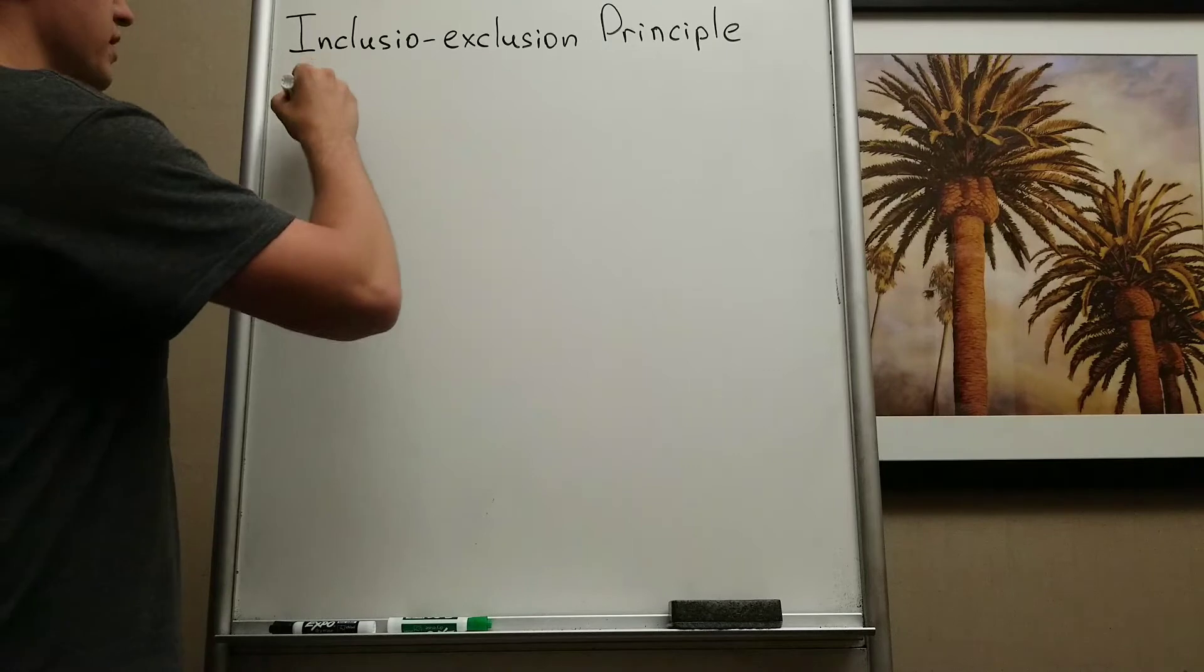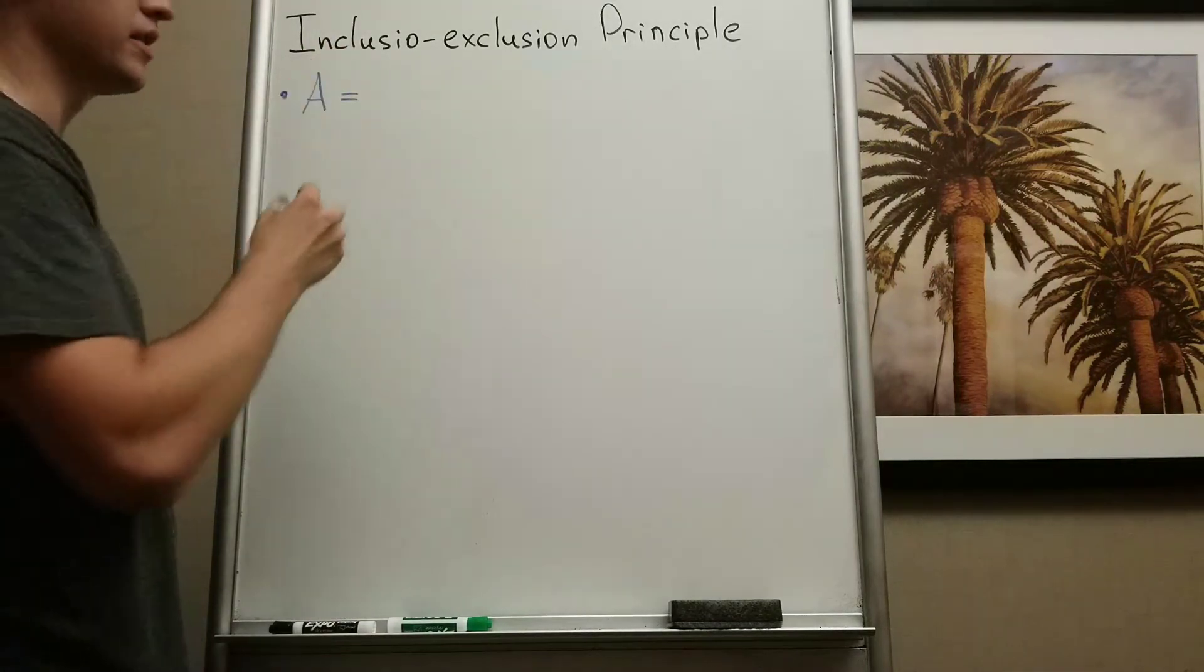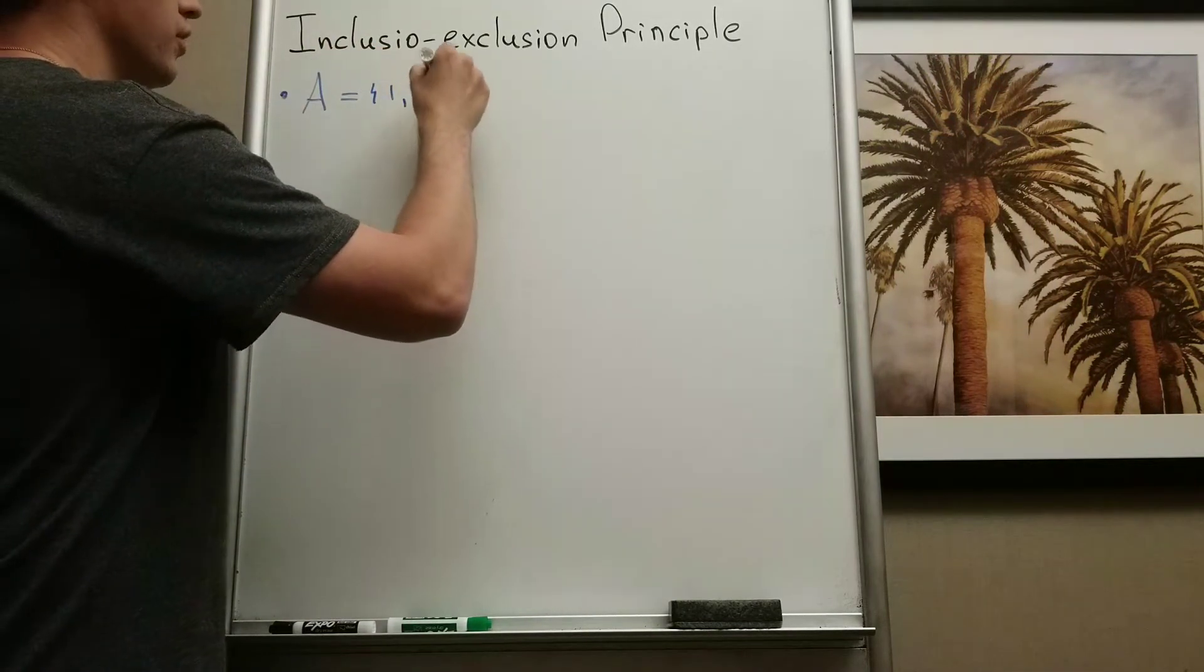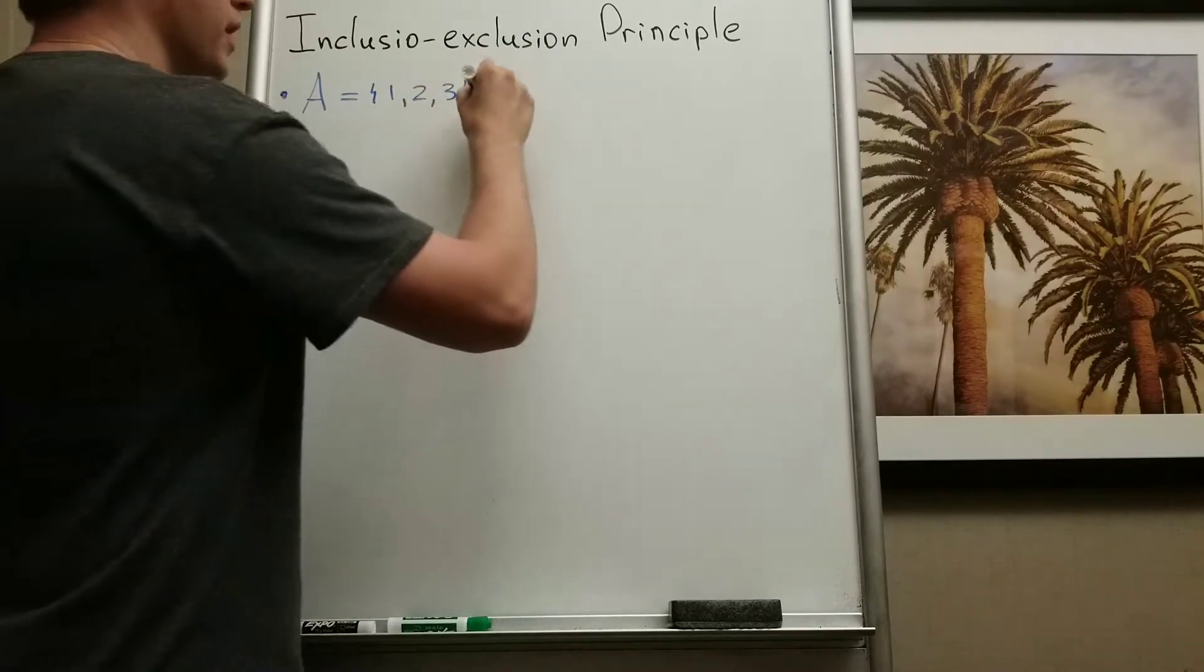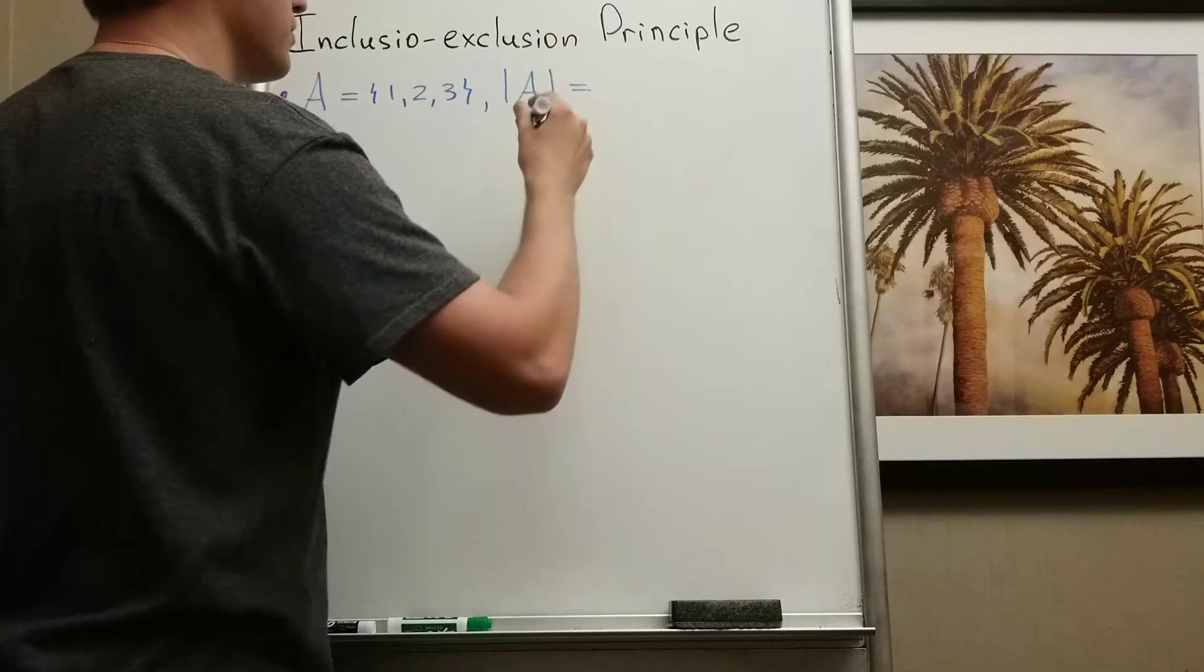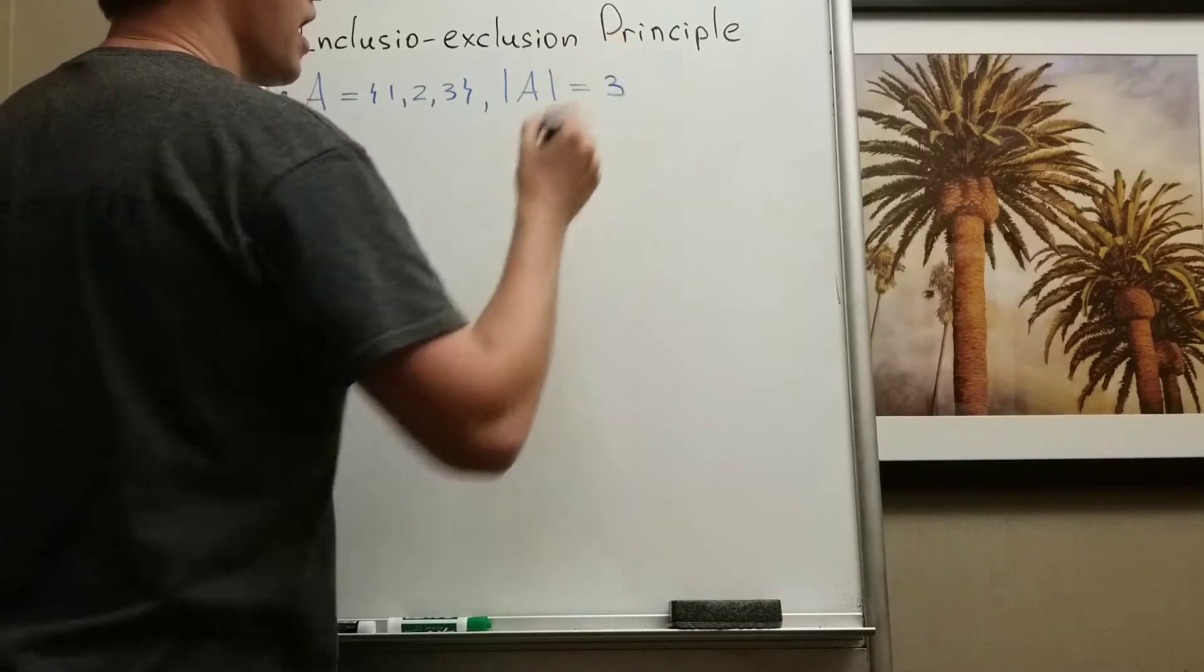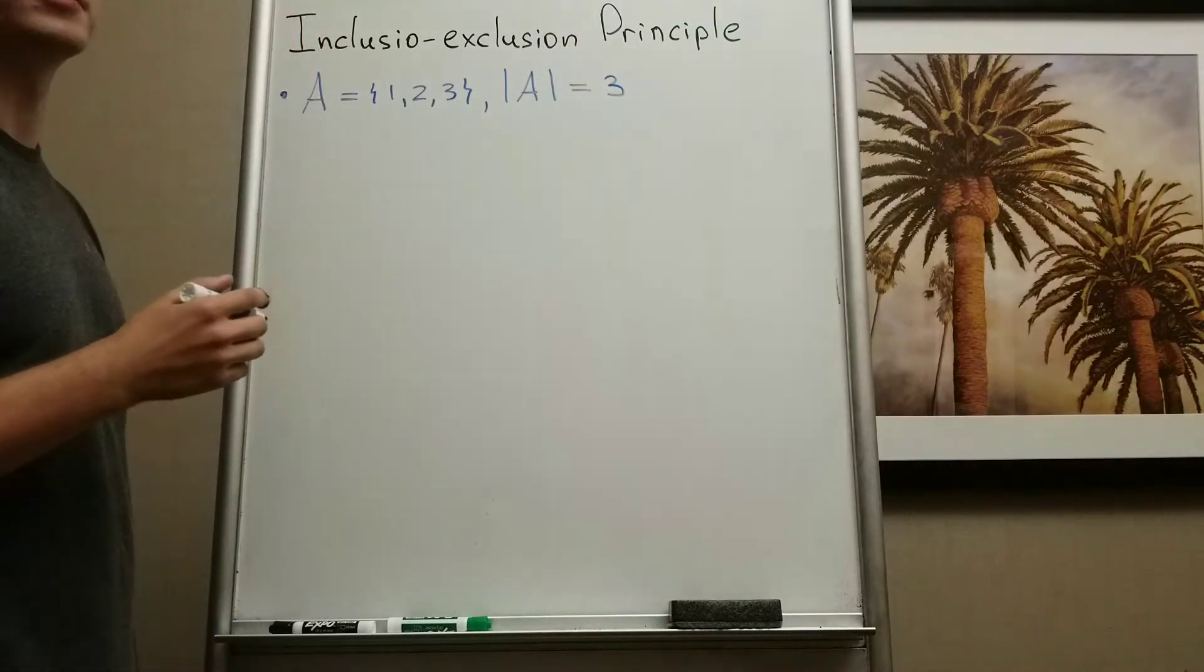So let's start with this example. If we have set A with elements 1, 2, and 3, we know the cardinality of a finite set. The cardinality of a finite set is just the number of elements. So in this case I have three elements, so the cardinality is 3.